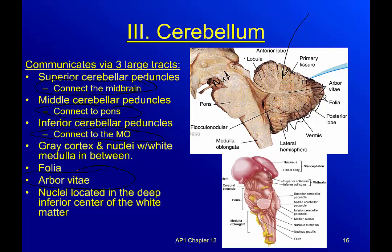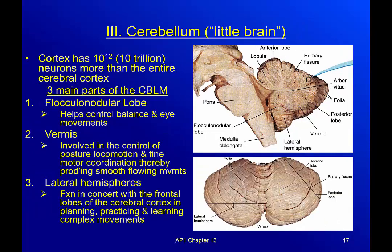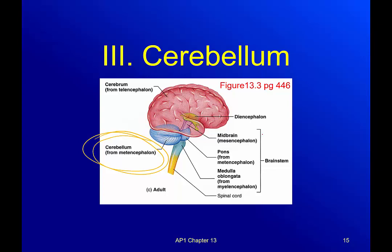Arbor Day is about trees, so the arbor vitae is that internal part that looks like a tree. You also have nuclei where cells attach to other cells located deep in the inferior center of that white matter. The cerebellum, which translates to 'little brain,' actually has 10 trillion more neurons than the entire cerebral cortex — so in this little structure in the back, we have 10 trillion more neurons than the whole big cerebrum up front.